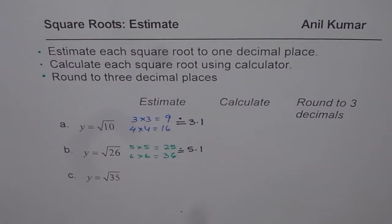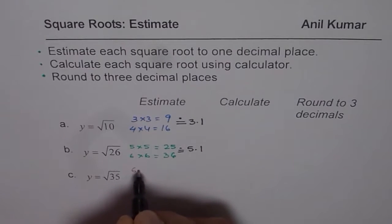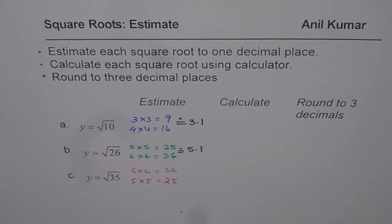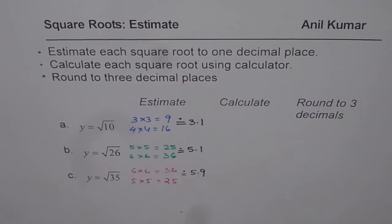Now let us do the last one, square root of 35. We know 6 times 6 is 36, which is higher than 35. 5 times 5 is 25. Since 35 is slightly less than 36, our estimate should be slightly less than 6. So 5.9 is a good estimate. That is how we can estimate.